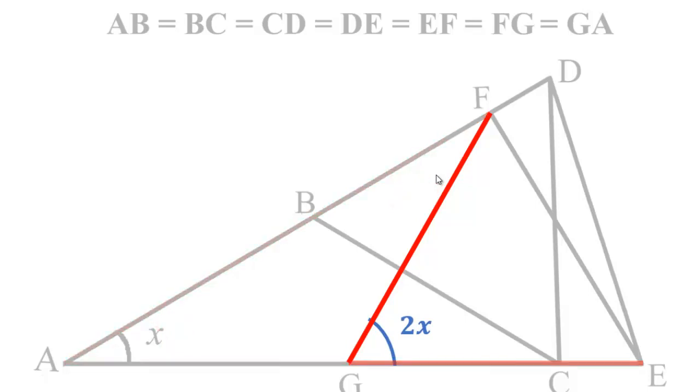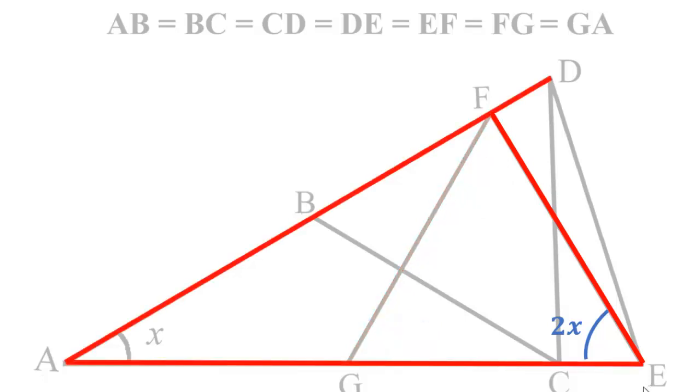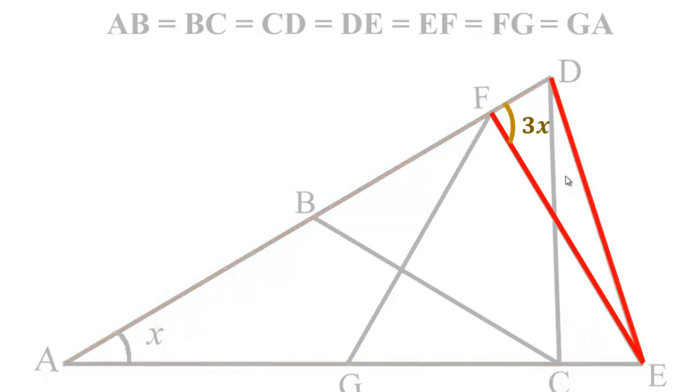Again by property one, angle FEG equal to 2X because FG equals to FE. Now in triangle AEF, the exterior angle EFD equals to sum of interior opposite angles. That is 3X. And as EF equal to ED, therefore angle EDA also equals to 3X.